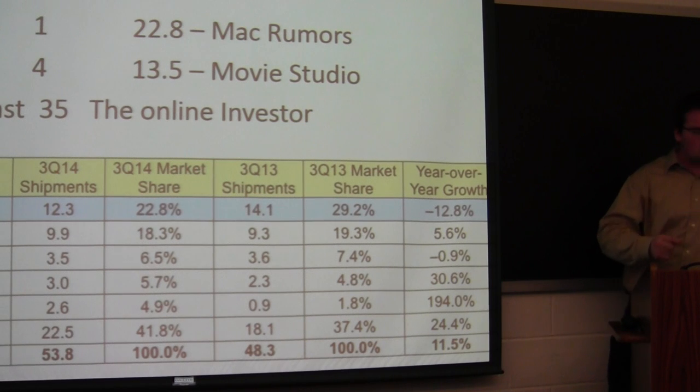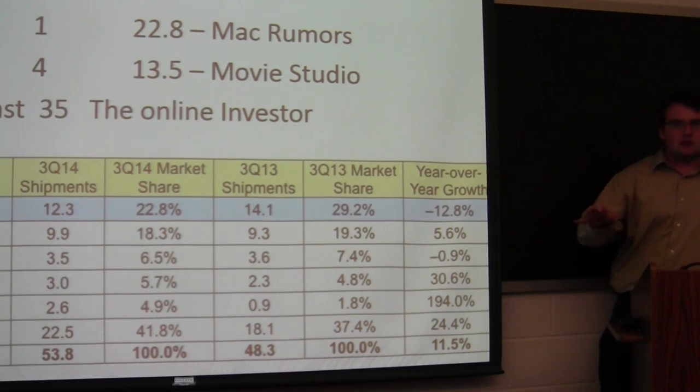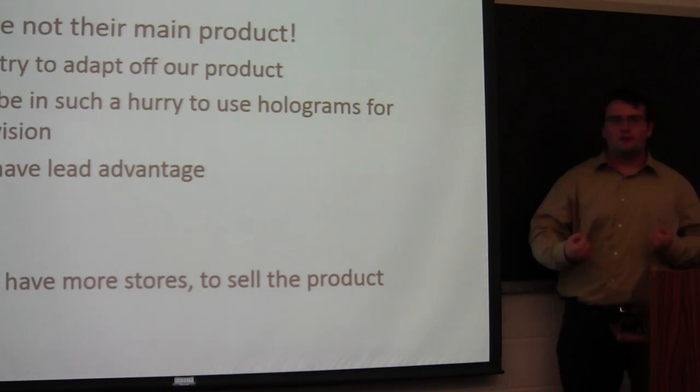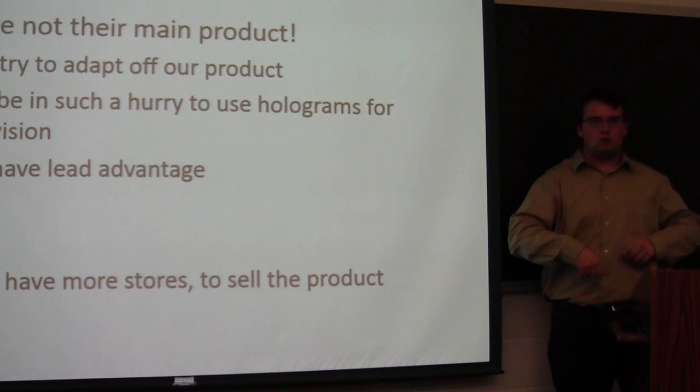We also have Sony. Sony, they displayed the Clairo in Europe. And Comcast, they just might not be up to the challenge, up to innovation. As you can see, Apple is ranked number one, that was by Mac Rumors. Sony was ranked number four in Movie Studio. And Comcast is now up to 35, because they merged with Time Warner.